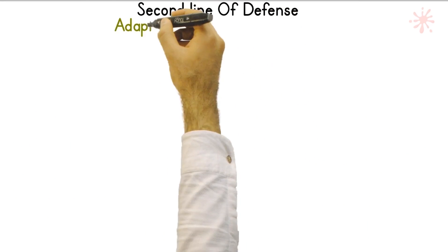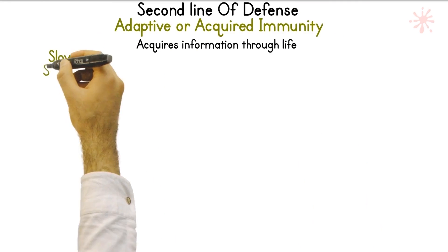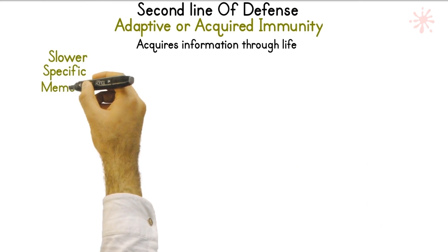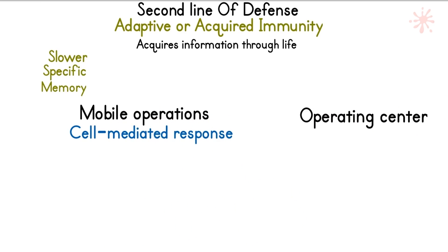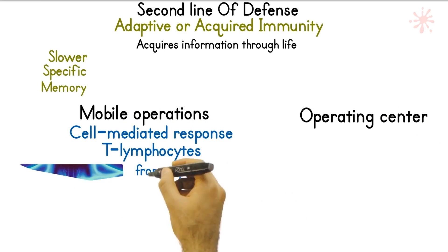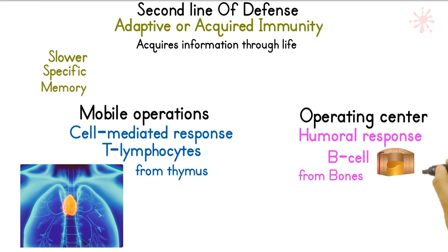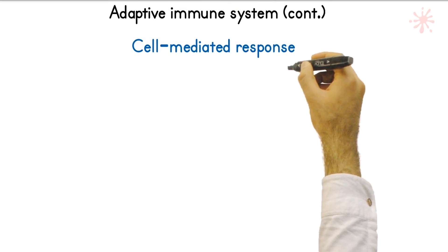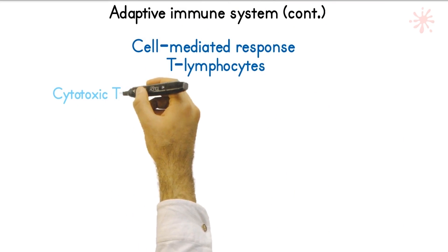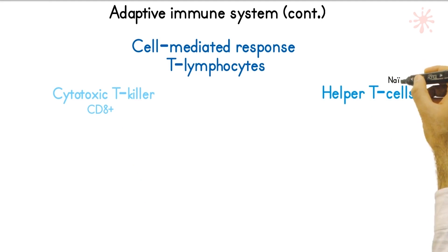The adaptive system acts when the innate system fails to eliminate the problem. Characteristics of this system include slow response, specific targeting, and storage of information for a faster reaction upon next exposure. The acquired immune system has two parts: the cell-mediated response, containing T cells that mature in the thymus, and the humoral response, controlled by activated B cells and antibodies, which develop in the bone marrow. The cell-mediated system relies on two key cells: the cytotoxic T killer and the helper T cell.